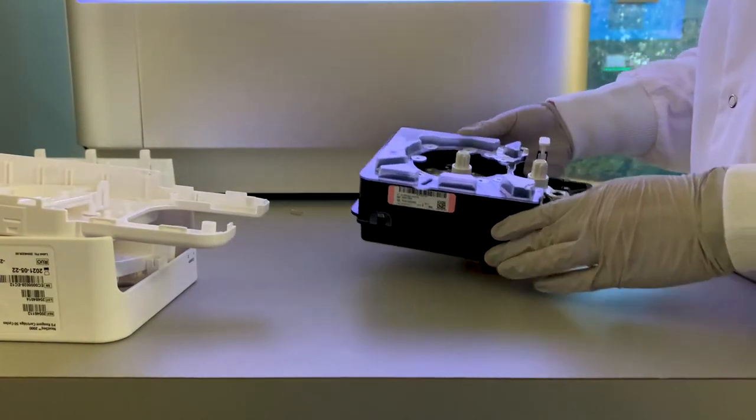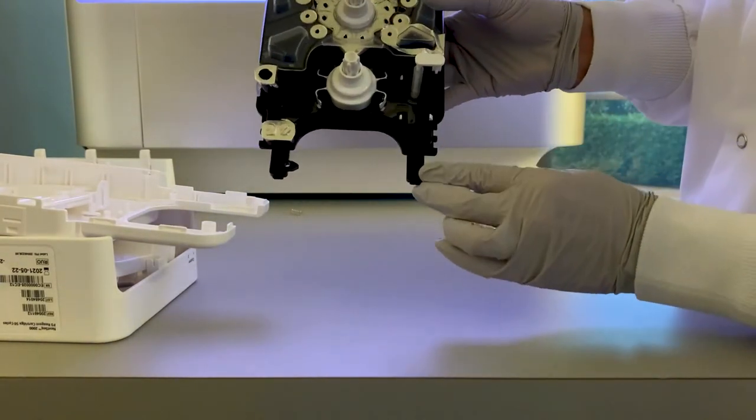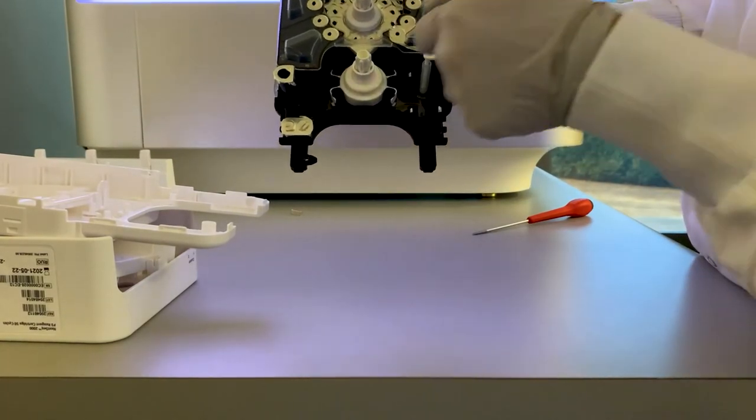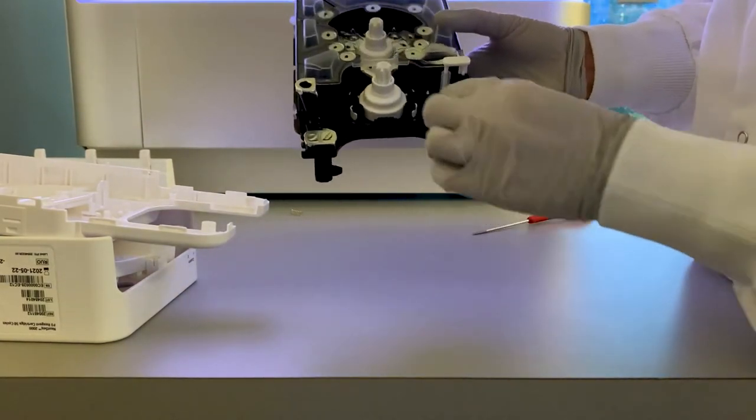Disconnect the four snaps on the valve assembly by pushing the snaps down and away from the reagent well plate edge. Remove the valve assembly by pulling the underside of the assembly.